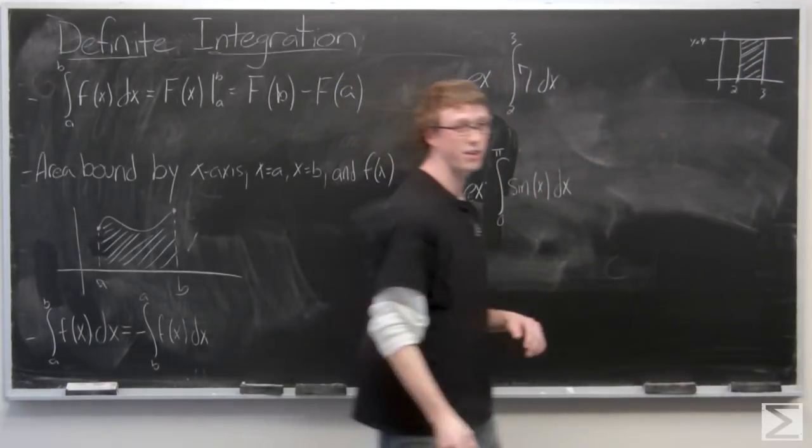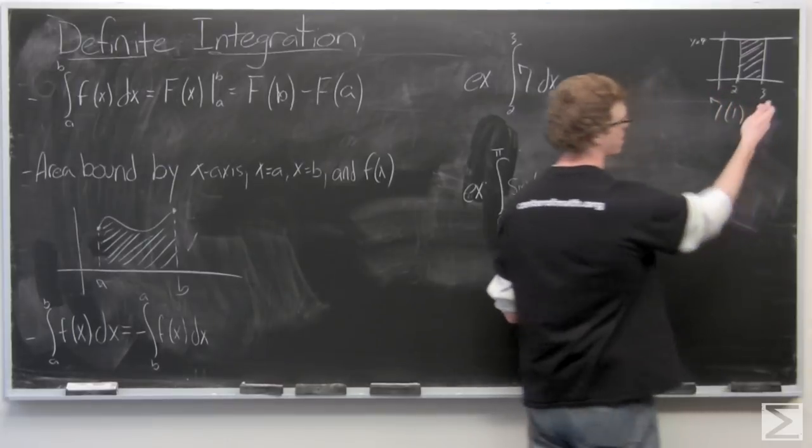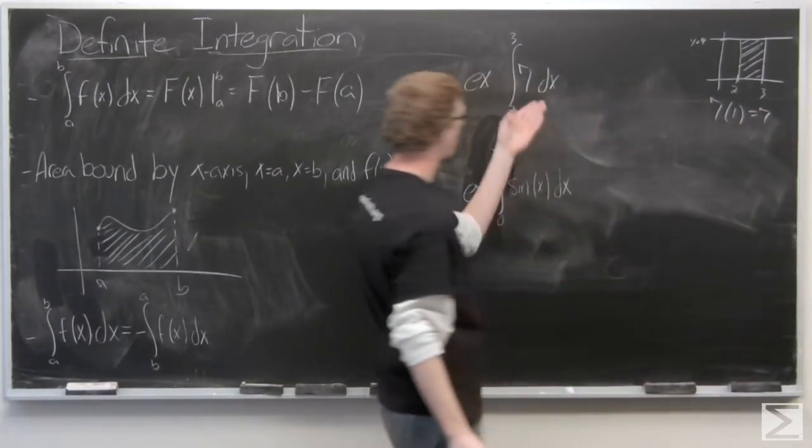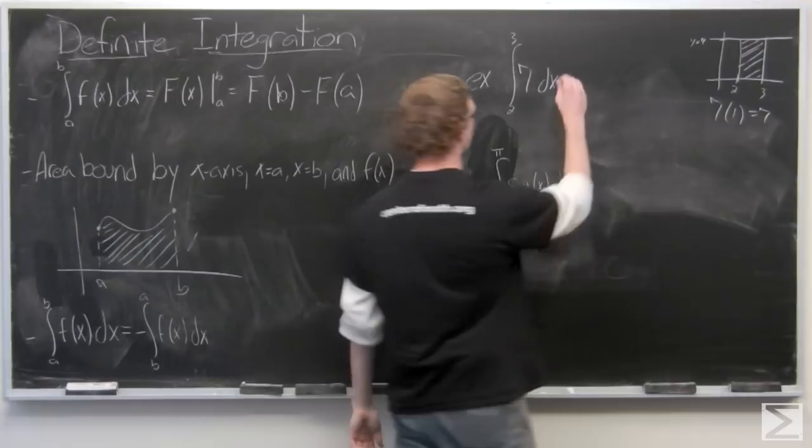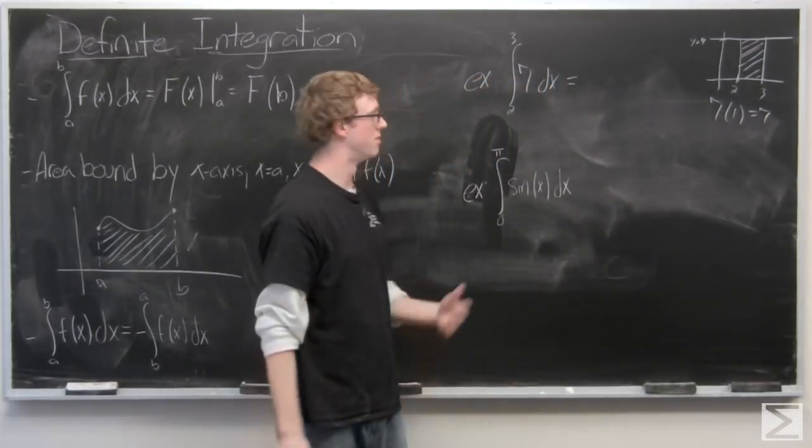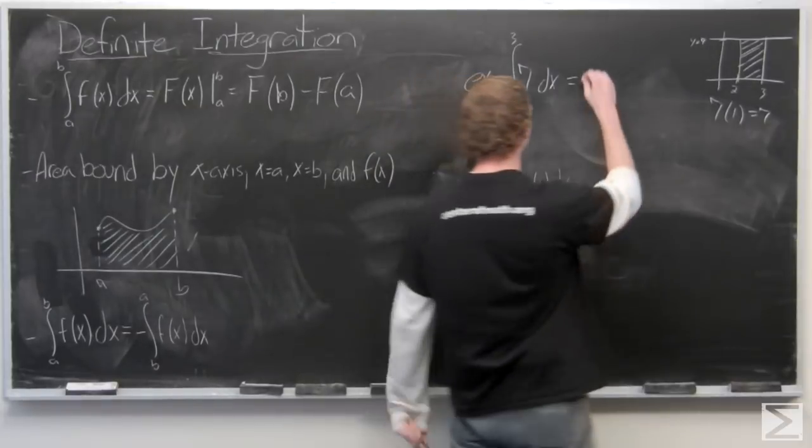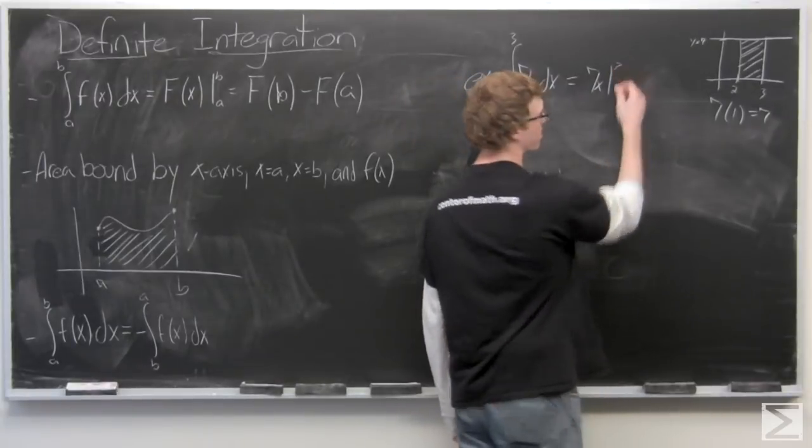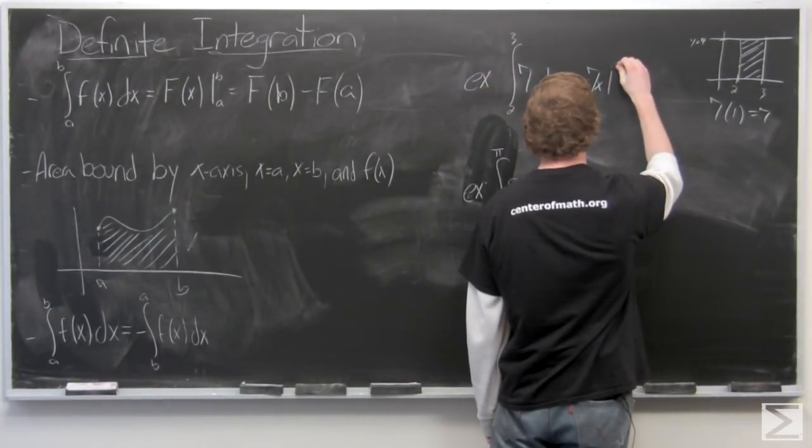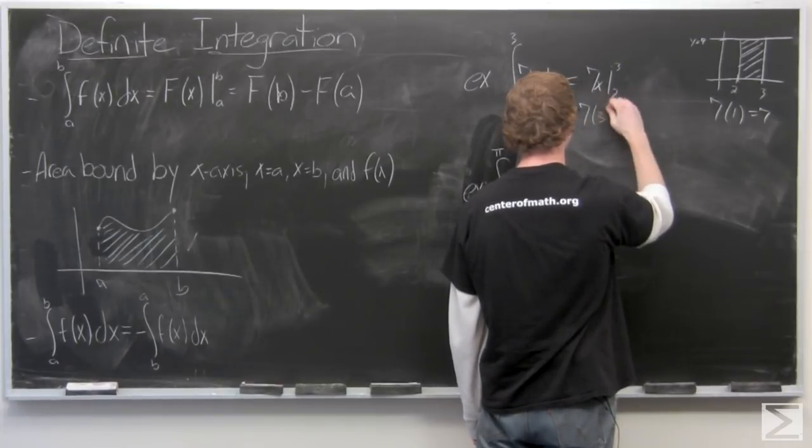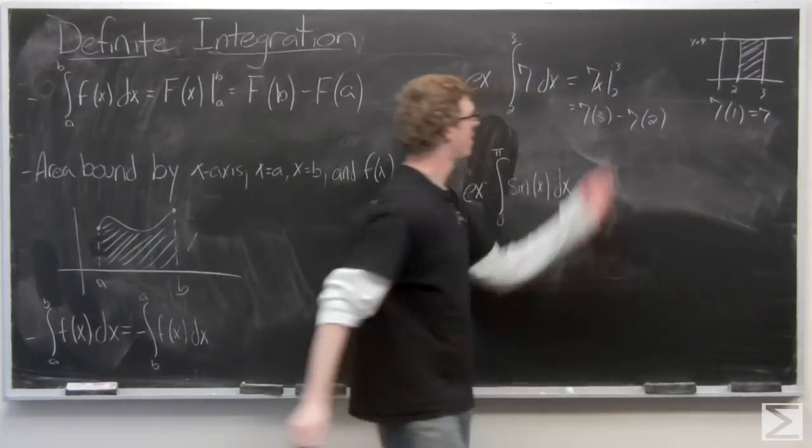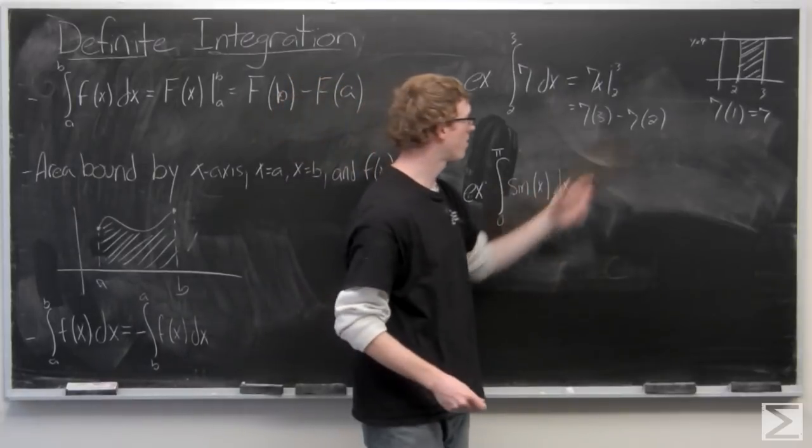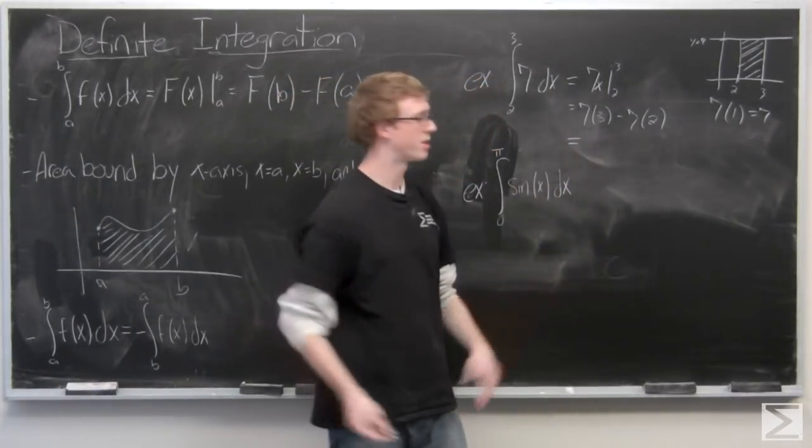And if we just calculate that out ourselves, it's going to be 7 times 1, which is the difference between 3 and 2. Base times height of a rectangle, it's just going to be 7. So when we do the integration, we can see that the integral of a constant is just going to be 7x. And we need to evaluate that from 2 to 3. That's just our new function with the upper bound plugged in and our new function with the lower bound plugged in. And this is just going to be 21 minus 14, which is 7.